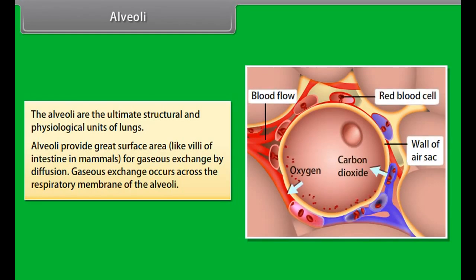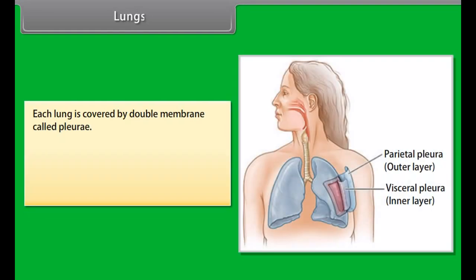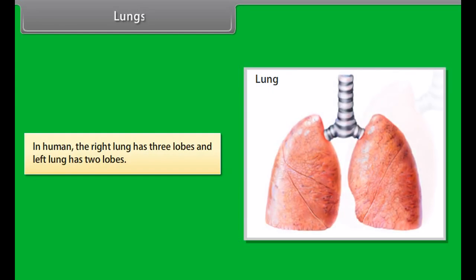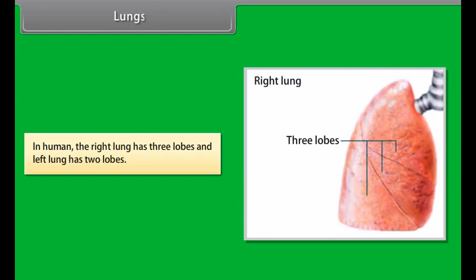The human larynx consists of glottis, cartilages, hyoid bone, thyroid membrane, vocal cords, and laryngeal ligaments and muscles. Glottis is an opening in the floor of the pharynx leading to the larynx. There are nine pieces of cartilages — three are single and three are paired. The epiglottis is a leaf-like structure that prevents the entry of food into the respiratory tract during swallowing.